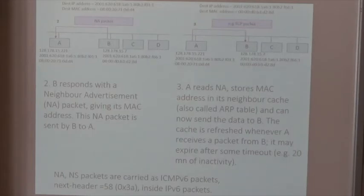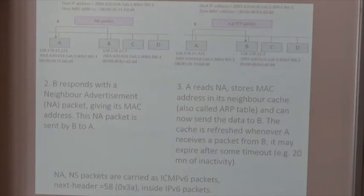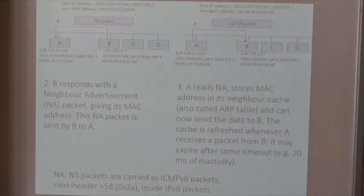We have seen that in order to know B's MAC address, A had sent an NDP neighbor solicitation packet or ARP request packet. Now the question is: do you do that whenever you have one IP packet to send? That would be suboptimal. So what all systems do is maintain a cache. In IPv6, it's called a neighbor cache. In IPv4, it's called the ARP table — and even for IPv6, software often continues to call it the ARP table.